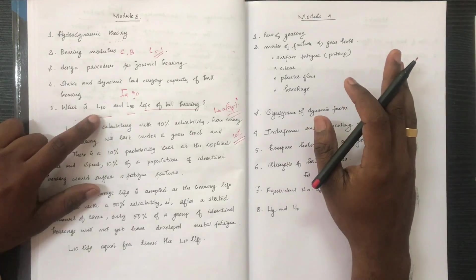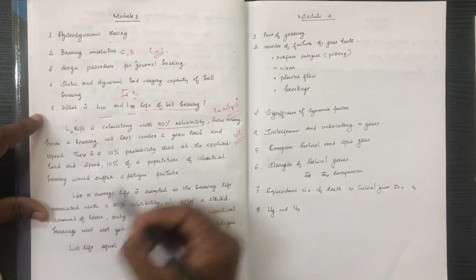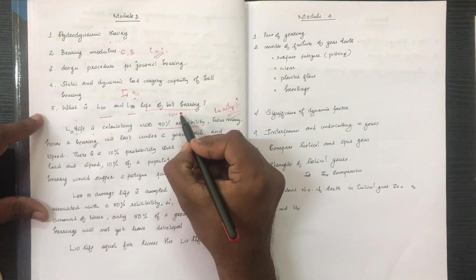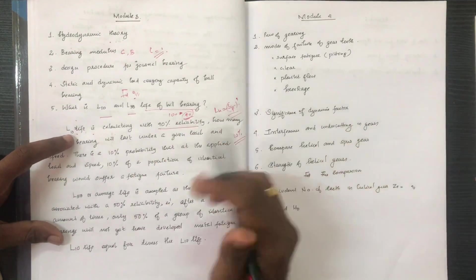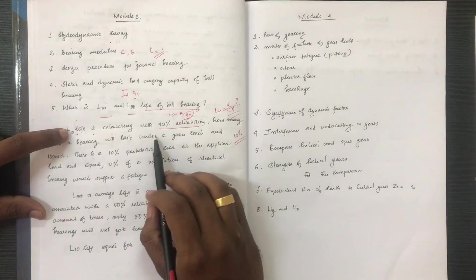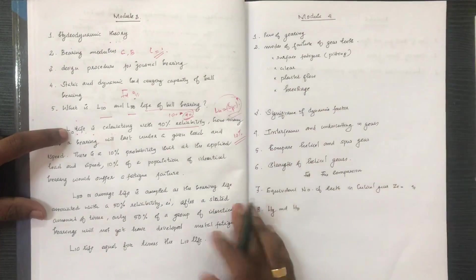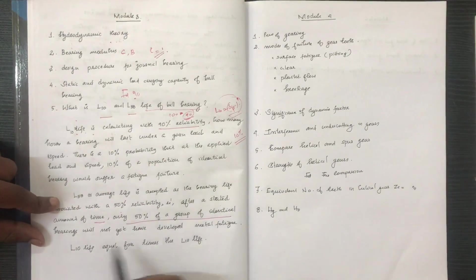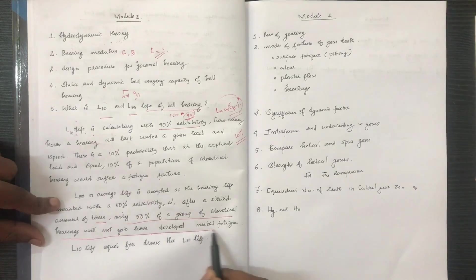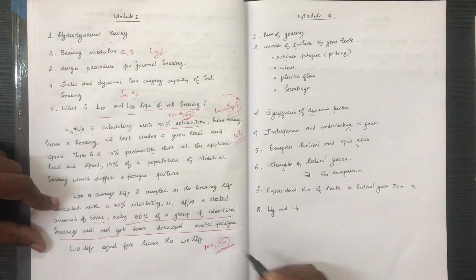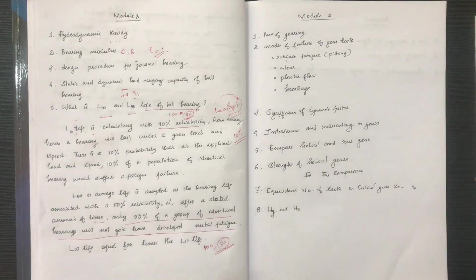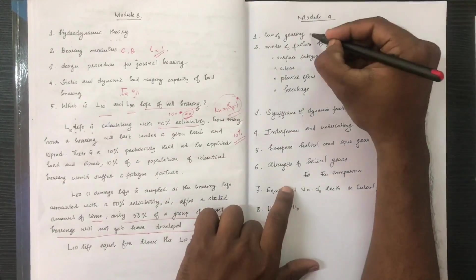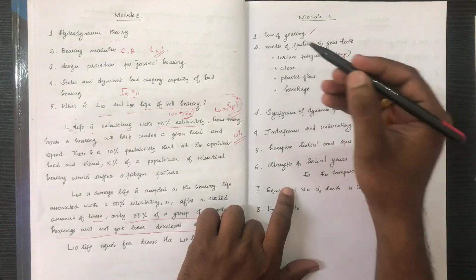L10 life is calculated at 90% reliability — if you have 100 bearings, 90% will survive the stated life. L10 life is very significant. L50 is 50% reliability — after the stated amount of time, only 50% of identical bearings will not have deteriorated. L50 is also important.